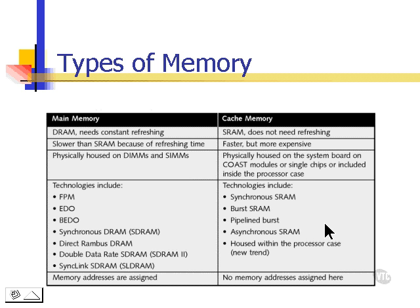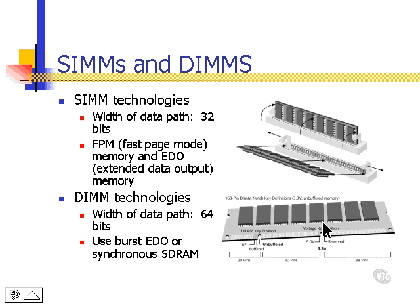Depending on what type of memory we need, we'll choose either a SIMM or a DIMM. A SIMM is a single inline memory module. It has a data path of 32 bits and can come in varieties such as FPM — fast page mode — or EDO, extended data output.